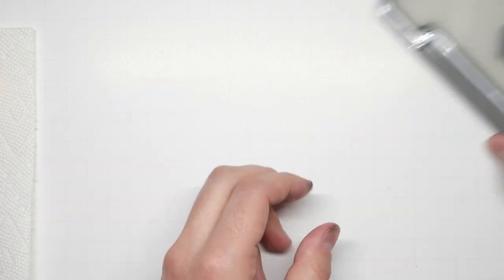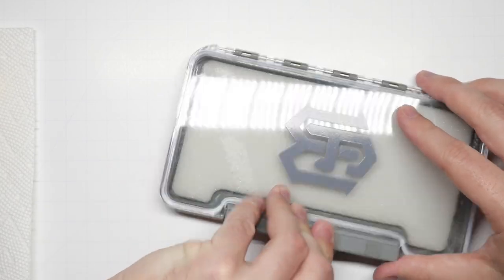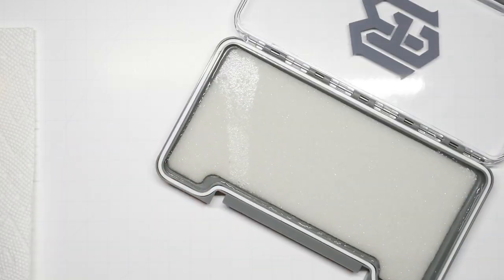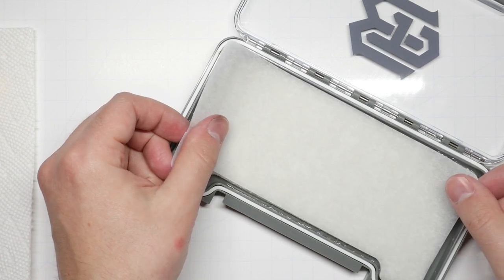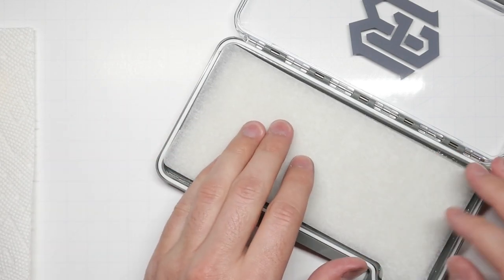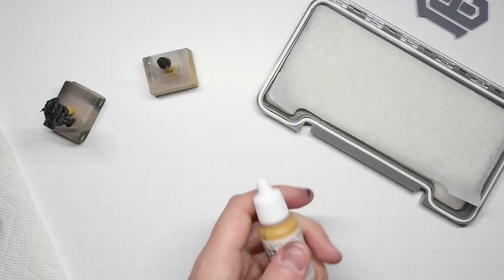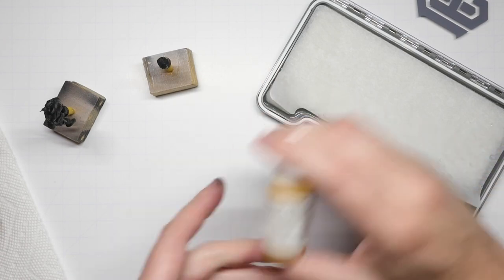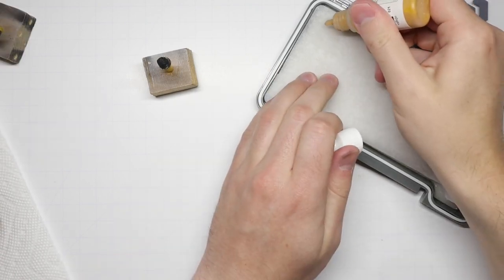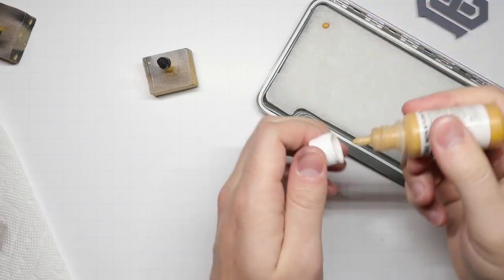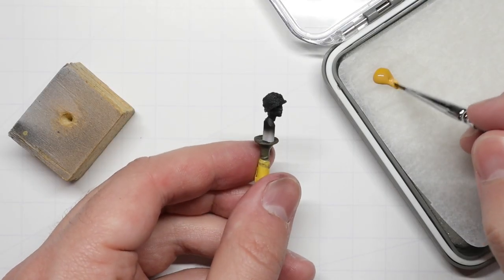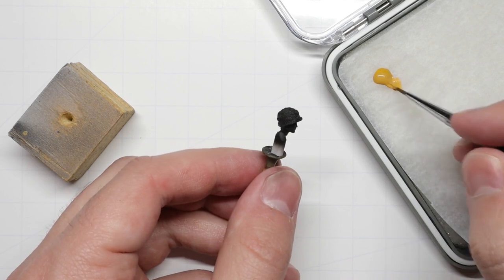Once everything is primed up, we'll switch gears to our wet palette. This great little palette is from the good folks over at Frontier Wargaming. We're going to start with our head first in this video. I'm going to split this into two parts so we have adequate time to cover everything, so be sure to check out Part 2 for our uniform painting and weathering stages after this video is over.